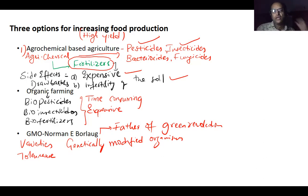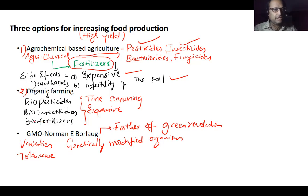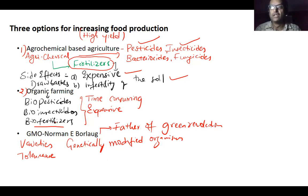The next method to improvise agriculture for high yield is organic farming. Instead of using chemical pesticides and insecticides, we use eco-friendly bio-pesticides and bio-insecticides. Instead of chemical fertilizers, we use bio-fertilizers — naturally made fertilizers like cow dung mixed fertilizers, and fertilizing with the help of earthworms, called vermiculture. However, extracting these bio-pesticides and insecticides is very time-consuming.